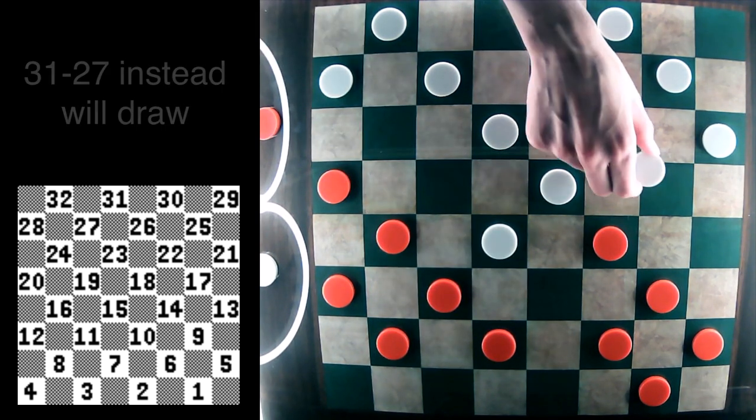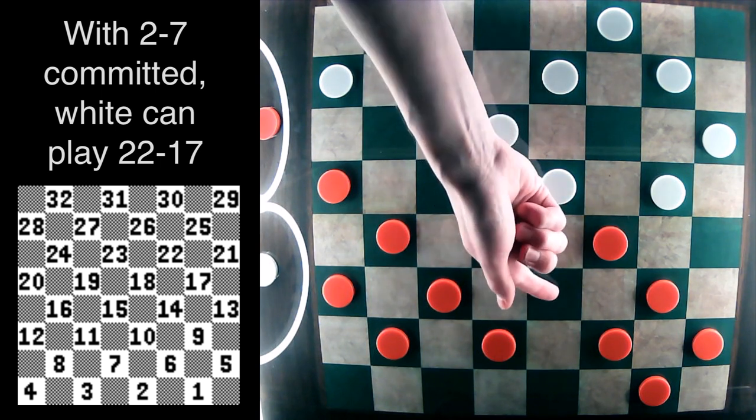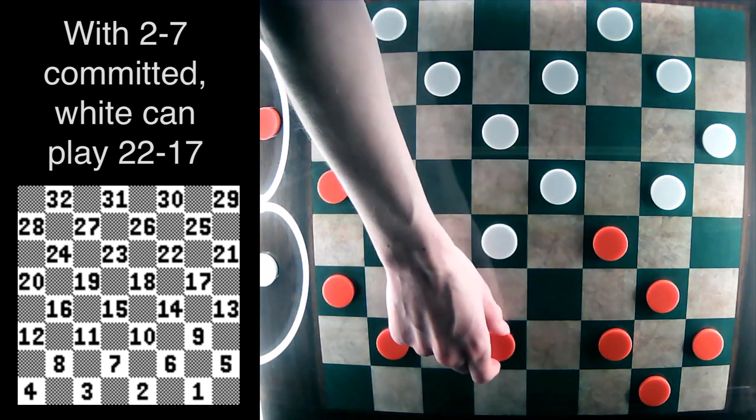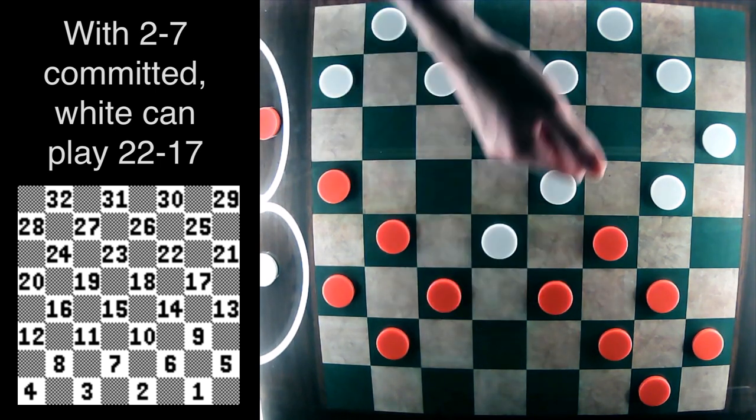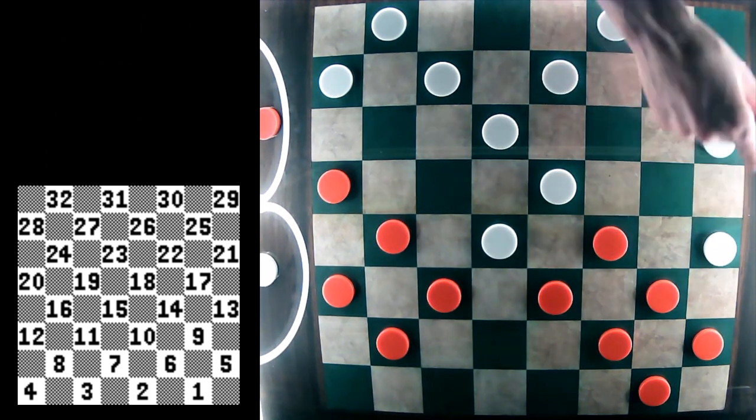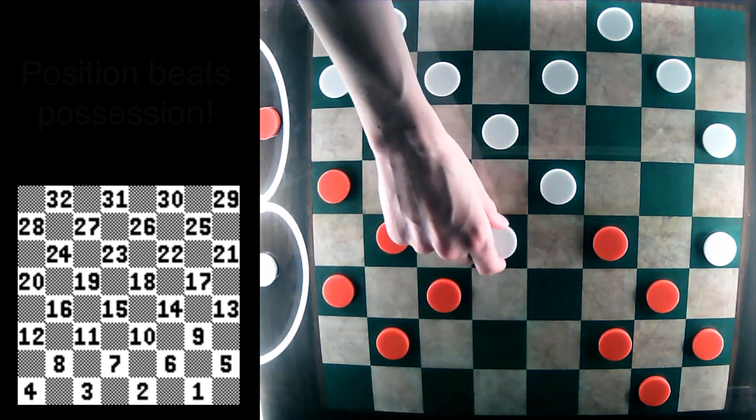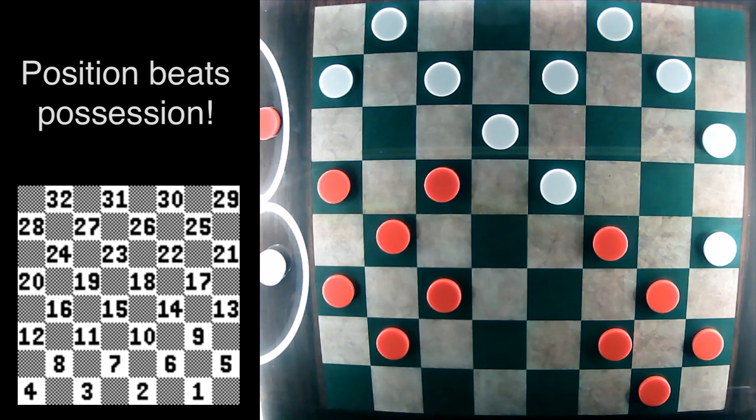And white can safely play 22-17 now. Red must protect the piece on 10, so it covers up with 7-10. And white is going to wait with 17-13 going a piece down. But as I've said in previous videos, the adage position beats possession applies here.